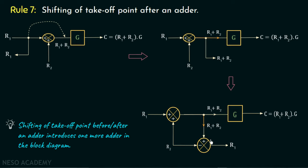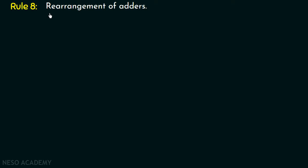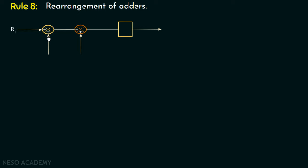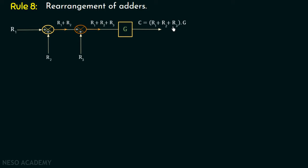We are now done with rule number 7. We will move on to rule number 8. Rule number 8 of block diagram reduction is regarding the rearrangement of adders. Consider this block diagram in which two adders are connected side by side. One input to the first adder is r1, the second is r2, giving output r1 plus r2. This is the first input to the second adder; the second input is r3, so the output of the second adder is r1 plus r2 plus r3.